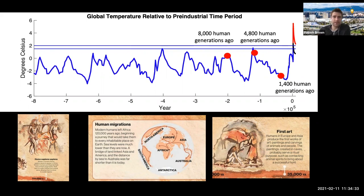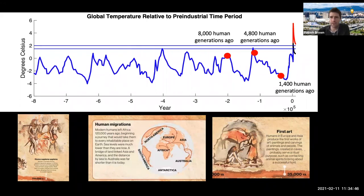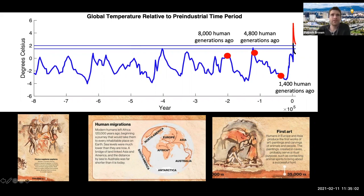120,000 years ago, humans — the first humans — leave Africa and start colonizing the rest of the Earth. That's 4,800 human generations ago. Then 1,400 human generations ago, we have solid evidence of culture in terms of cave paintings — so art — which I think is interesting.